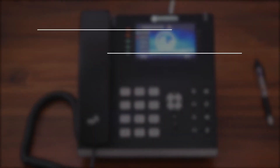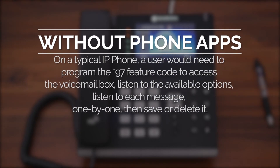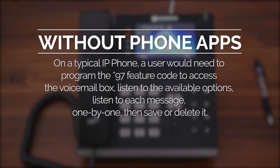Without phone applications, on a typical IP phone, a user would need to program the star 97 feature code to access the voicemail box, then listen to the available options, then listen to each message one by one, and then save it or delete it.